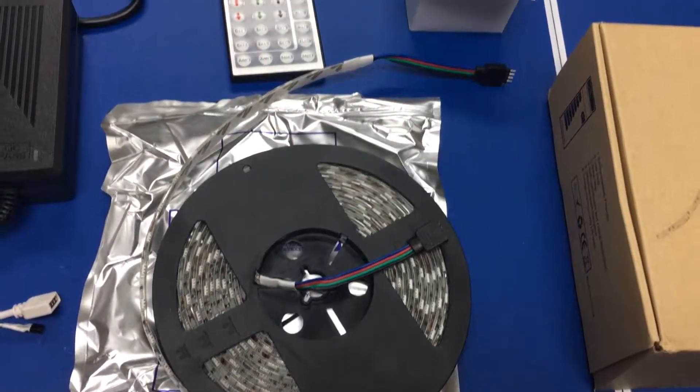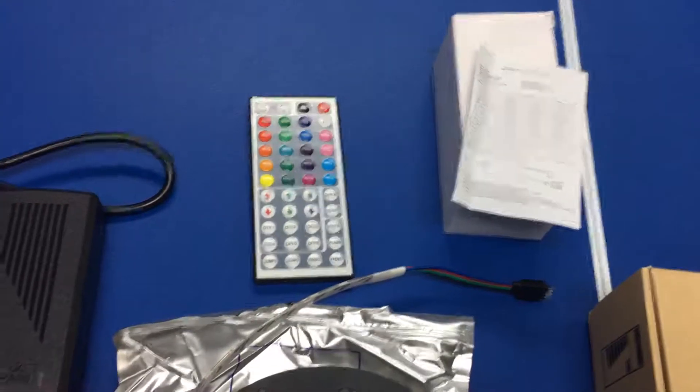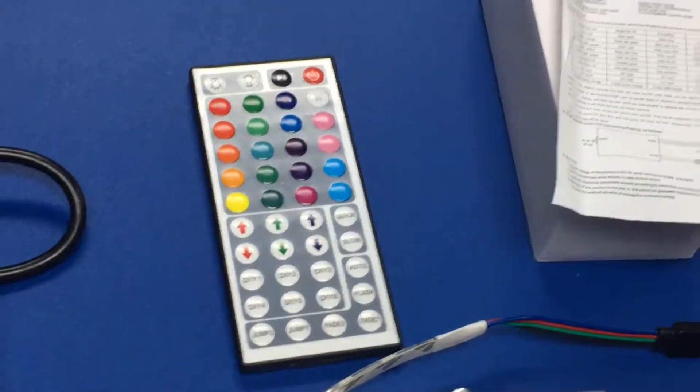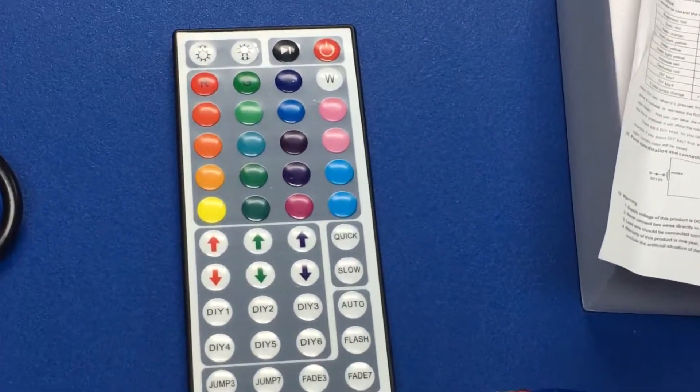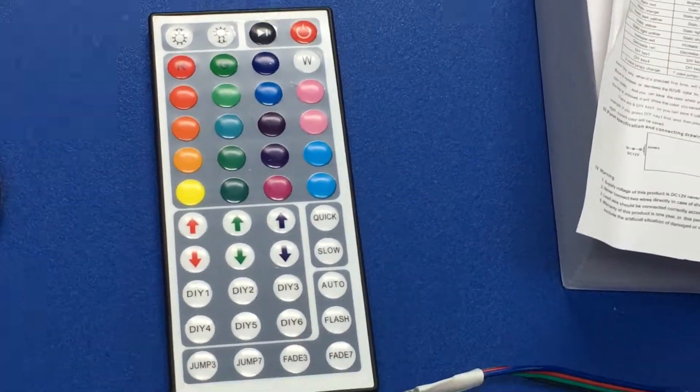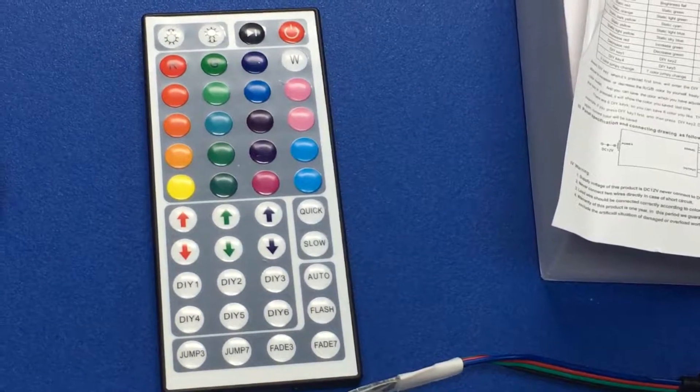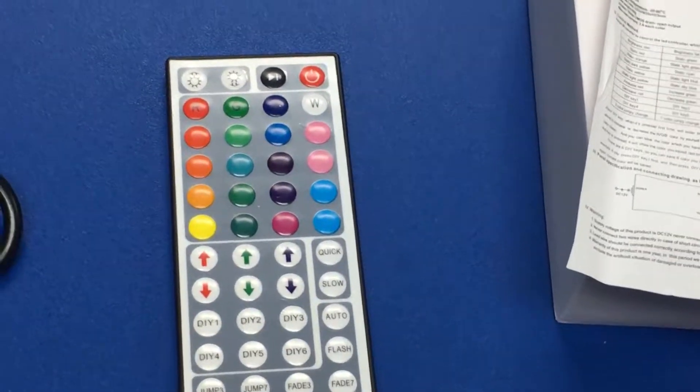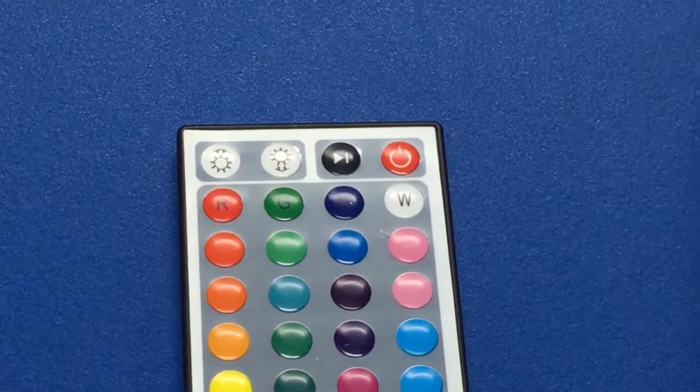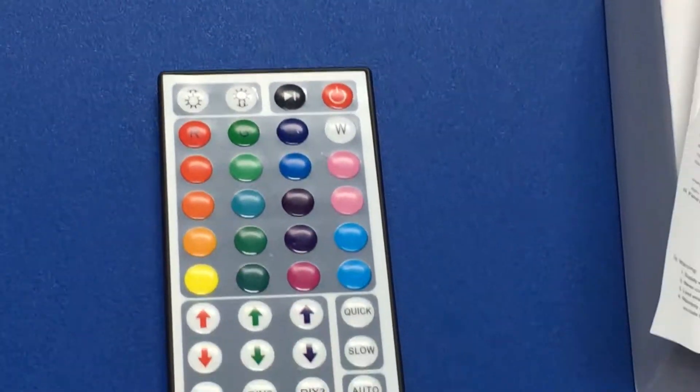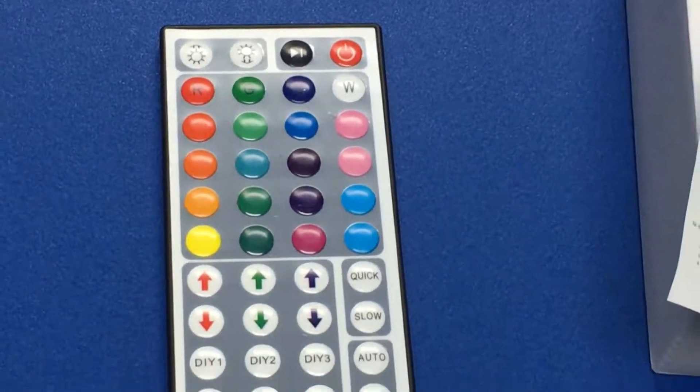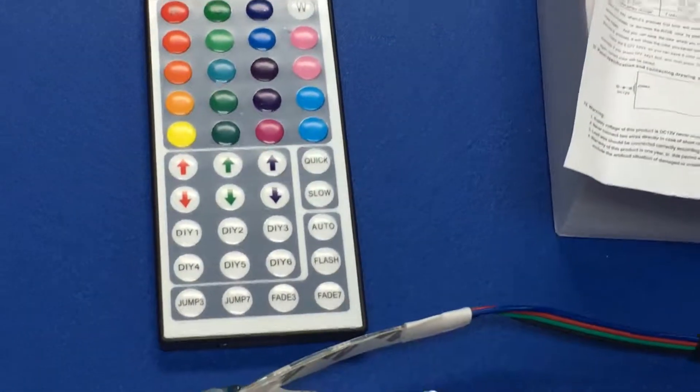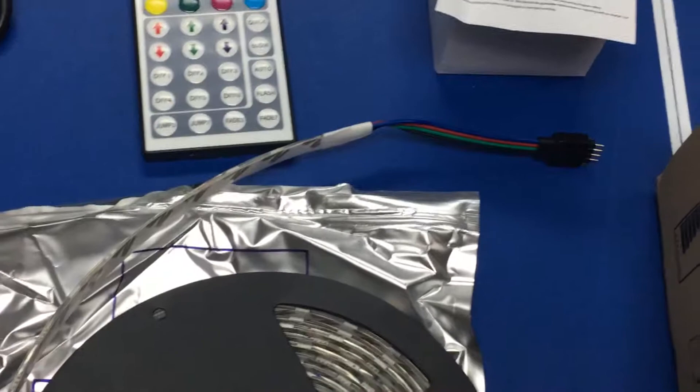It comes with a remote control. This remote control allows you to select a particular light color, and it allows you to select the patterns. Total eight patterns are available in this particular model. You can even increase or decrease the brightness of this LED strip light using the top two buttons. Pretty straightforward setup.